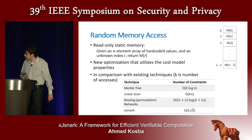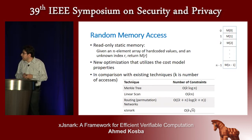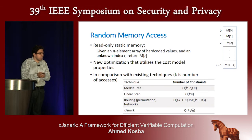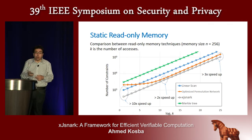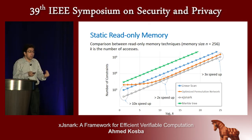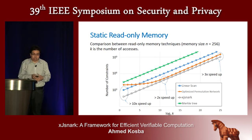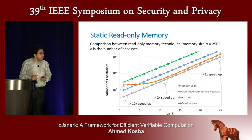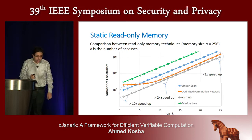Compared to earlier work, asymptotically the Merkle tree is more efficient. But when we evaluate with concrete constants, our scheme is actually better than all of these approaches when the memory size is small and for any number of accesses — better than the linear scan first, and later better than the optimized permutation network. It should be noted that current compilers don't use the optimized permutation network; we include it here just for fairness of comparison.